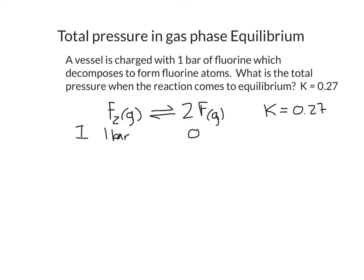To reach equilibrium I need to make fluorine atoms, and to make fluorine atoms I have to lose diatomic fluorine. Every time I use up one diatomic fluorine I make two fluorine atoms. So my change to get to equilibrium is that I lose x amount of diatomic fluorine to make two x fluorine atoms. At equilibrium I have 1 minus x of diatomic fluorine and 2x of fluorine atoms.